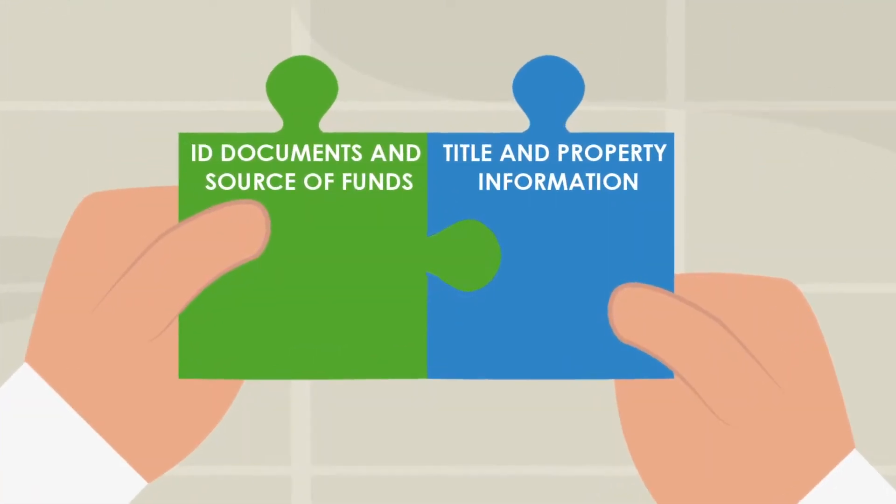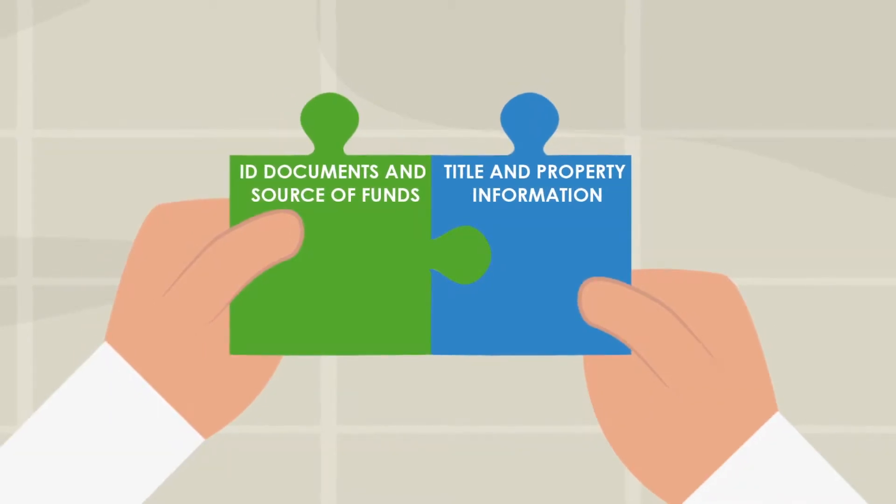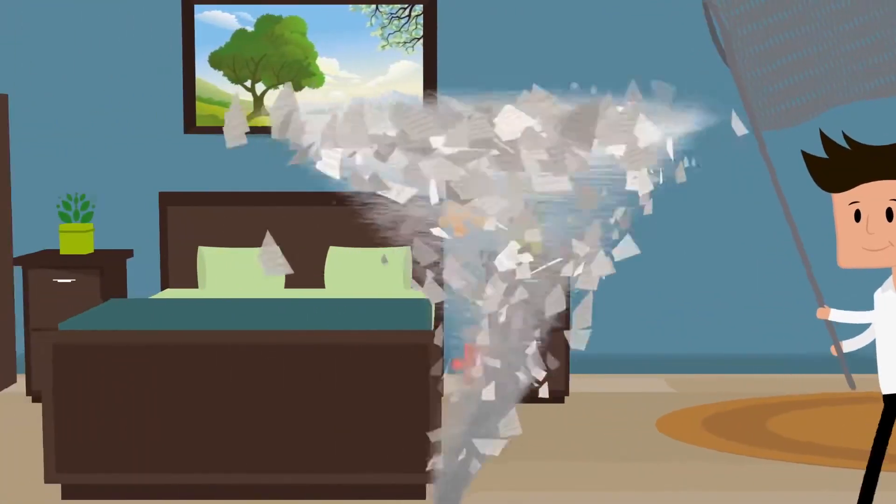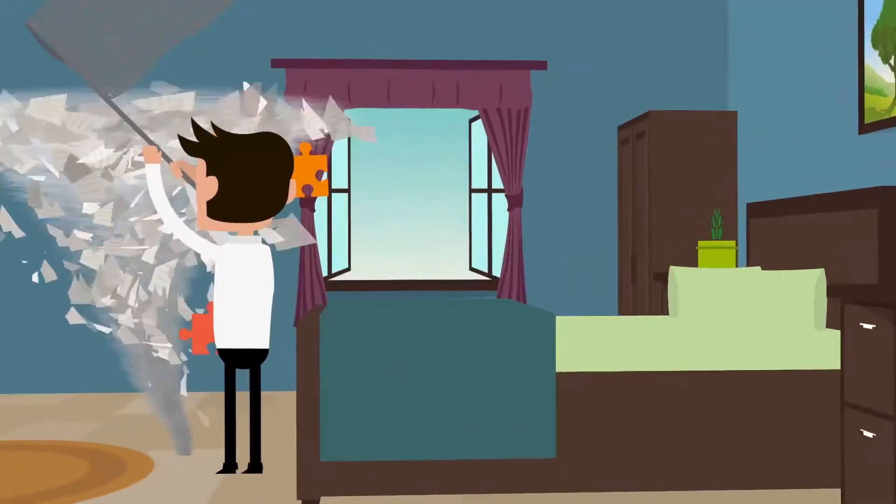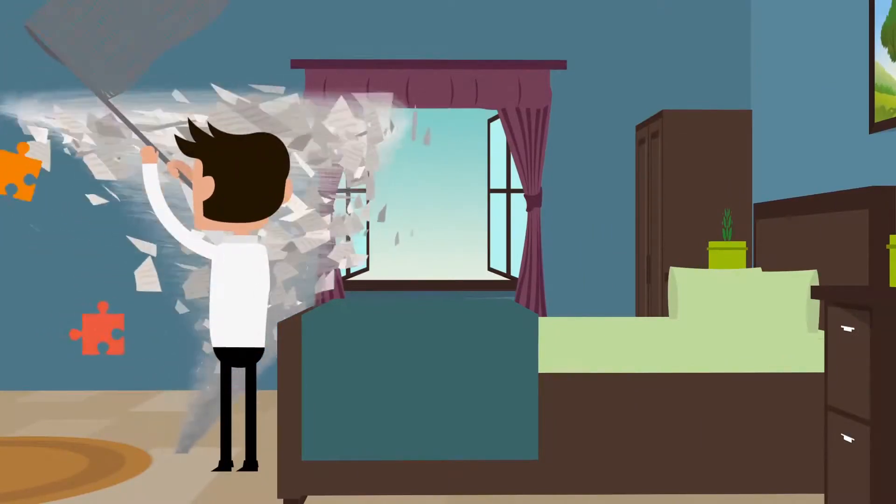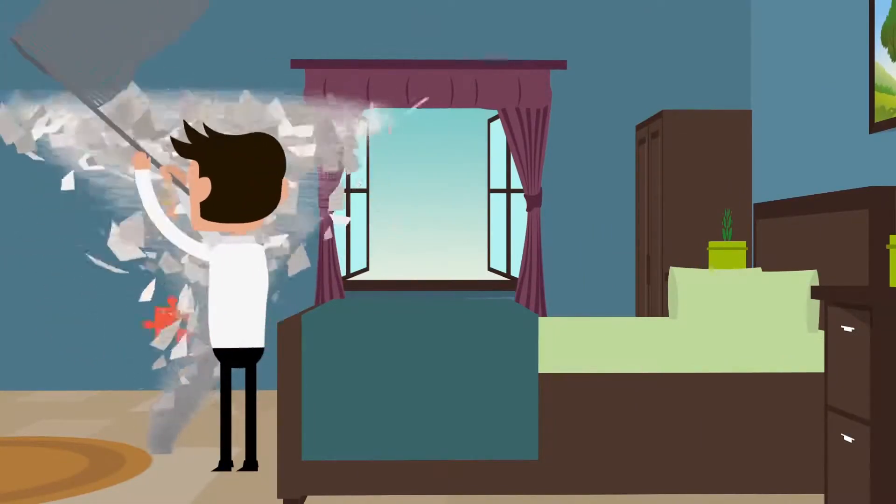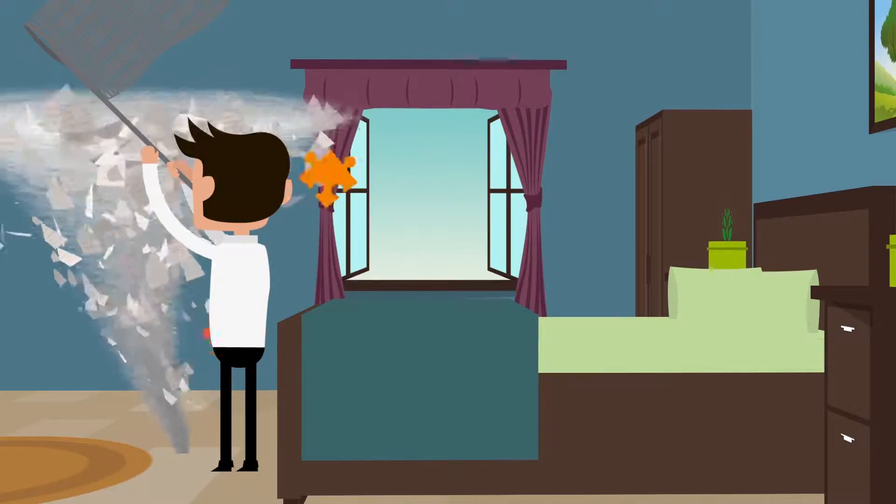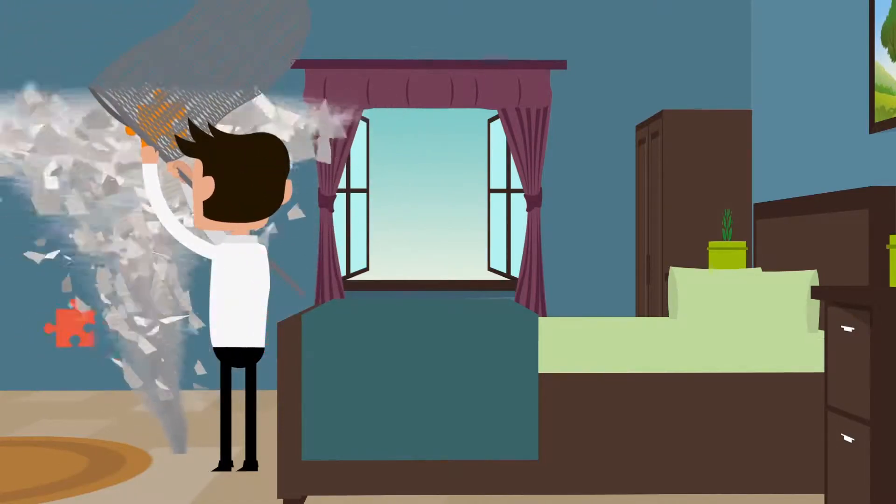When you sell your property, your conveyancer will need to get a copy of the title deeds and you'll need to provide information about the property. By doing this before a buyer is found, your conveyancer can help you deal with any missing paperwork in plenty of time. This can shave as much as 11 days off the conveyancing process later on.